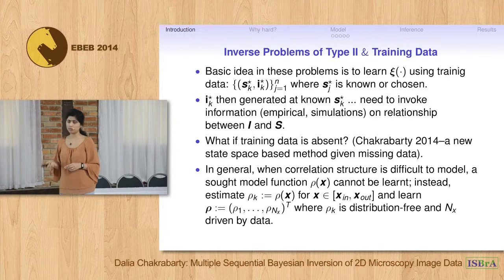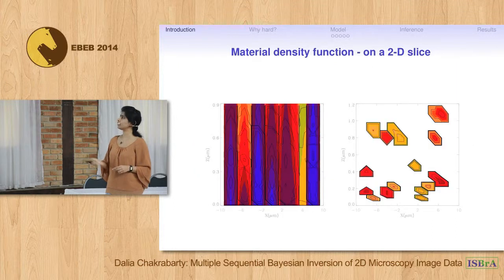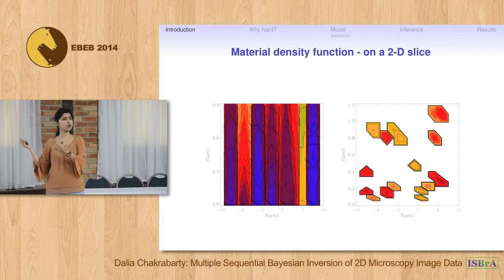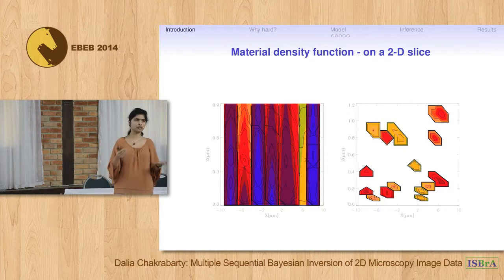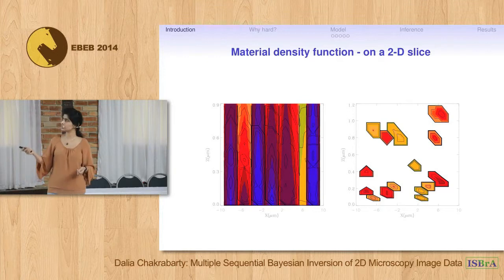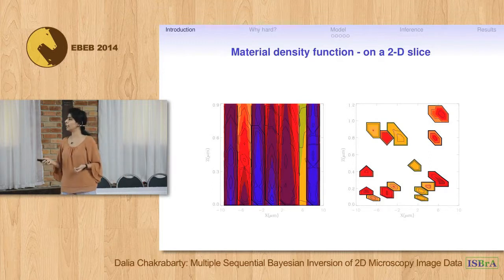We are faced with a similar situation in our application: we are interested in the material density function. The support of this function is in R³, spanned by three spatial coordinates X, Y, and Z. The examples I show are 2D slices generated at a particular value of one spatial coordinate — specifically, Y has been set equal to zero.